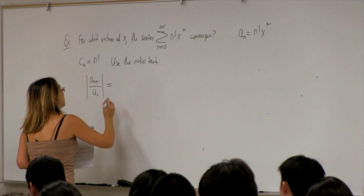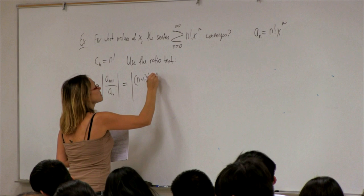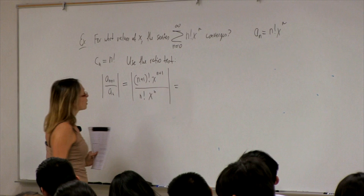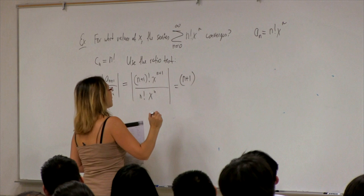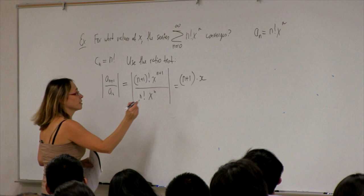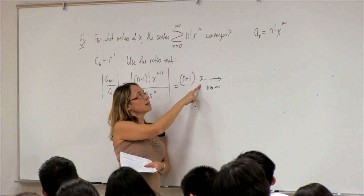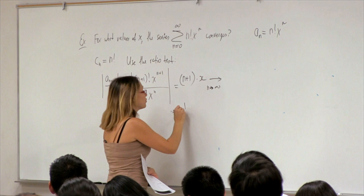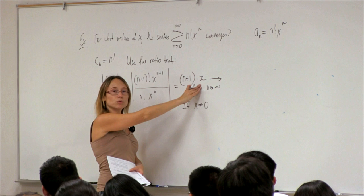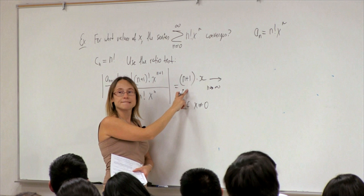We have (n+1)! · x^(n+1) divided by n! · x^n, taking absolute value gives (n+1)|x|. What is the limit of this expression as n goes to infinity? If x is not equal to 0 — for instance x equals 5 or 0.001 — we have a constant times (n+1), so the limit is infinity.